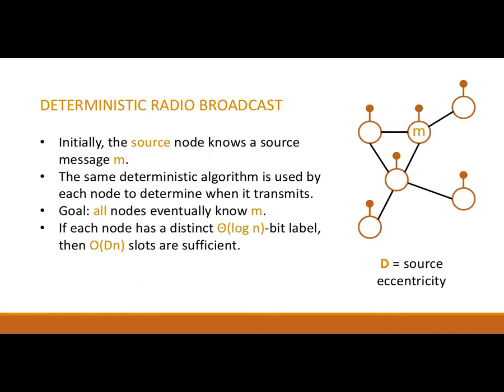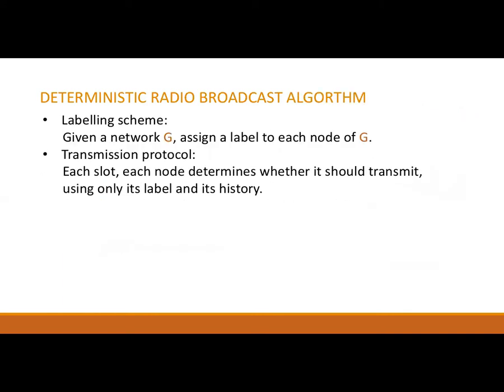In the network illustrated here, D is equal to 2. A deterministic radio broadcast algorithm consists of two parts: a labelling scheme, which assigns a label to each node of a network, and a transmission protocol, which enables each node to decide, based on its label and its history so far, whether to transmit, and if so, what to transmit.